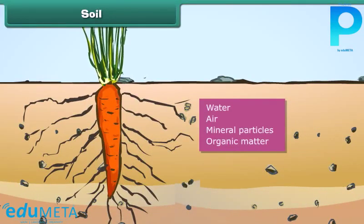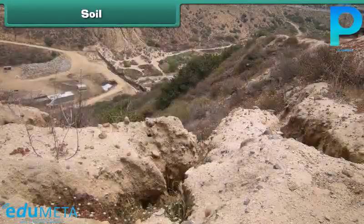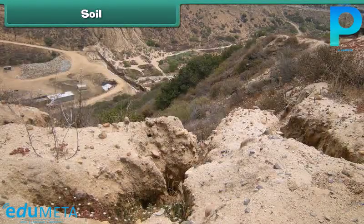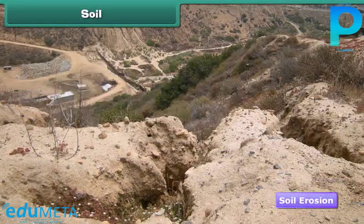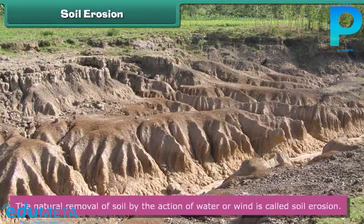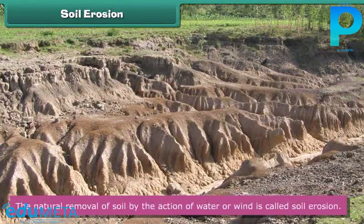Soil serves as a natural medium for the growth of plants. Most soils contain four basic components: water, air, mineral particles, and organic matter. But the fertility of soil has decreased significantly, mainly because of soil erosion. The natural removal of soil by the action of water or wind is called soil erosion.